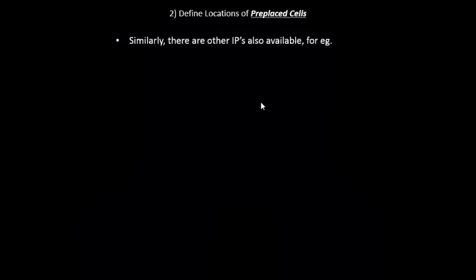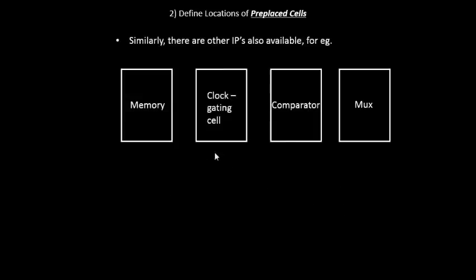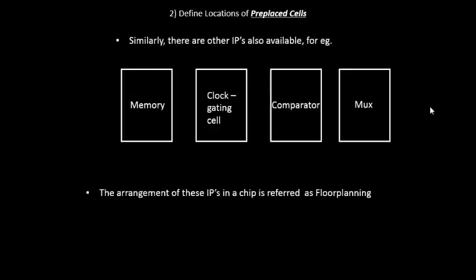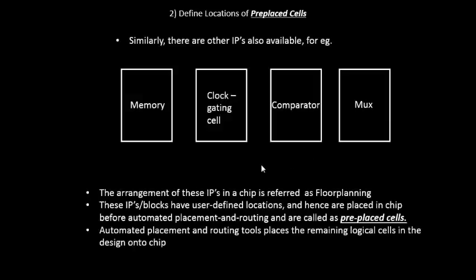Similarly, other IPs are readily available — things like memory, complex clock gating cells, comparators, and MUXes. All of them can be implemented once and instantiated multiple times onto a netlist. They receive input signals and deliver output signals, but their functionality is implemented only once. These are called pre-placed cells because their locations on the chip are defined once before the actual placement and routing.